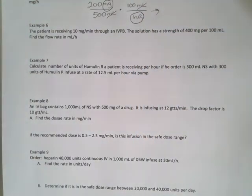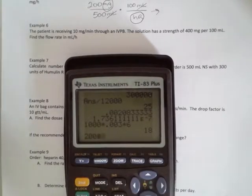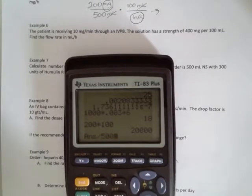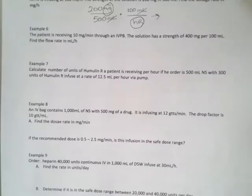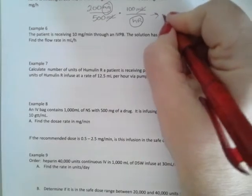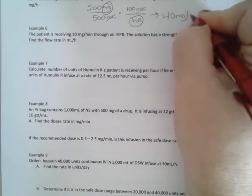So we take 200 times 100, divided by 500, which gives me 40. So I have 40 milligrams per hour.